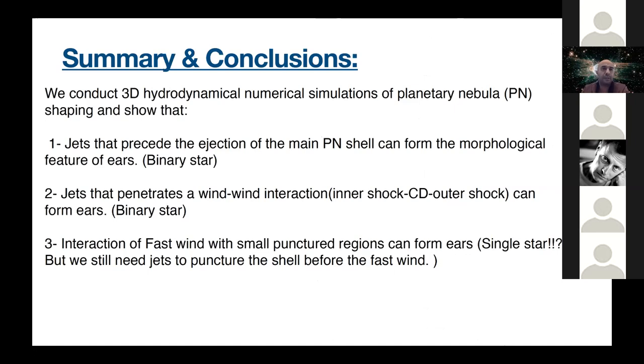To conclude, we could get ears in these scenarios. And I think in the three models, we can only say that we must have binary stars. I asked a question here in the third scenario, could it be a single star? Since it's only a fast wind with two punctured regions, but we still need to explain why do we have the two puncture regions there. Thank you.